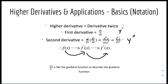Since dy/dx is the first derivative, we know it's the gradient function to describe the curve at any particular point. d²y/dx² will be the gradient function to describe the gradient function, and it will be useful in determining whether a turning point is a maximum point or a minimum point.